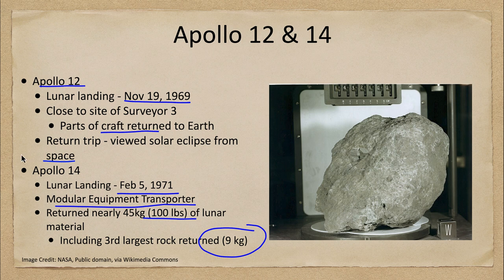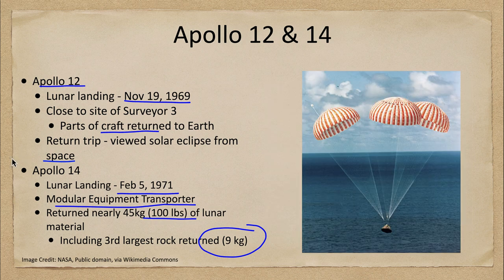Apollo 14 then returned to Earth a few days later, splashing down in the Pacific Ocean. Here we can see the command module with parachutes bringing it down to a softer landing in the ocean. The astronauts were then recovered from the command module by naval vessels that picked up them and all of the materials they brought back from the moon.